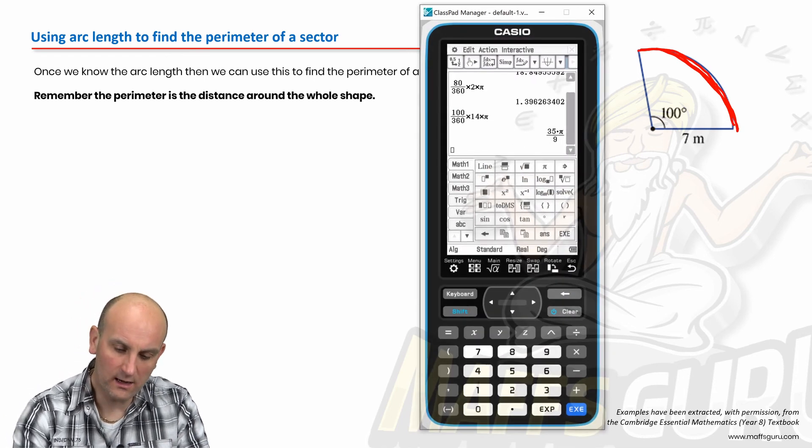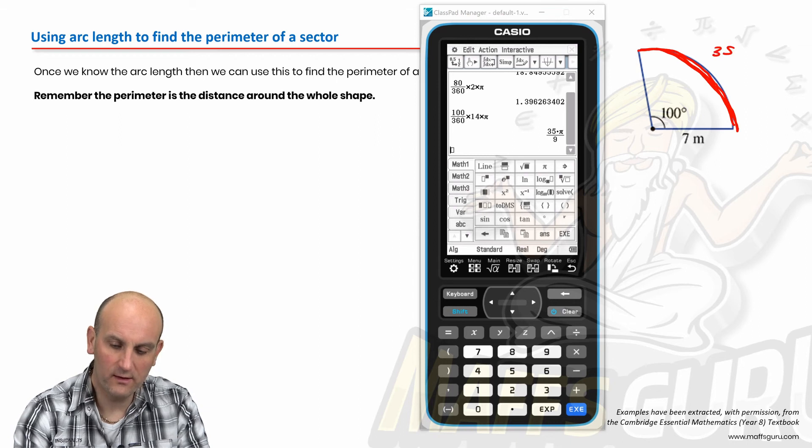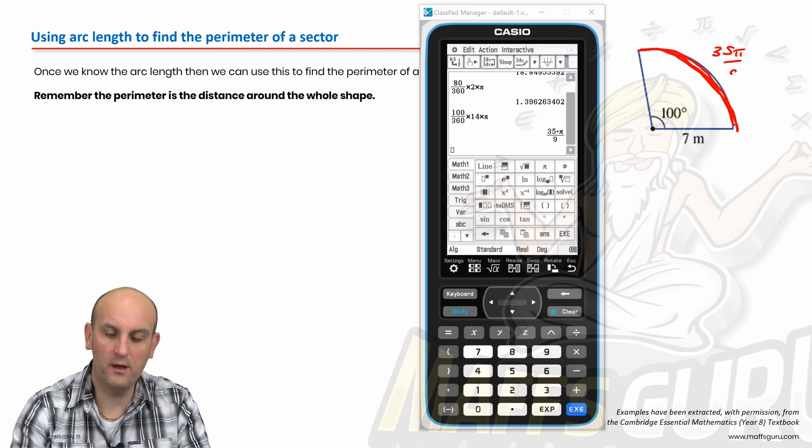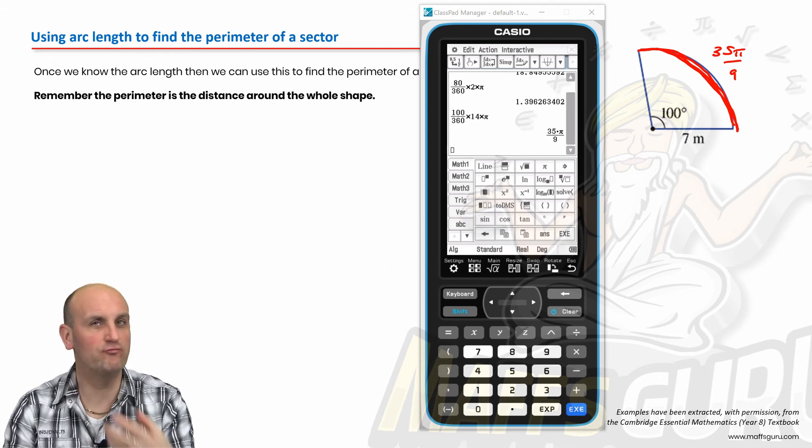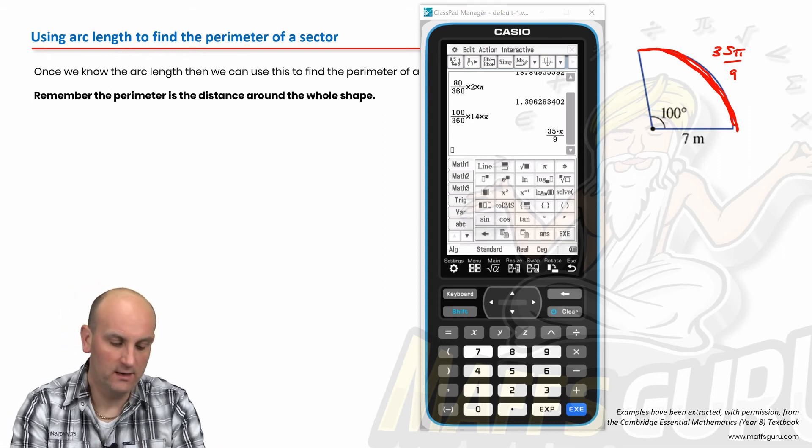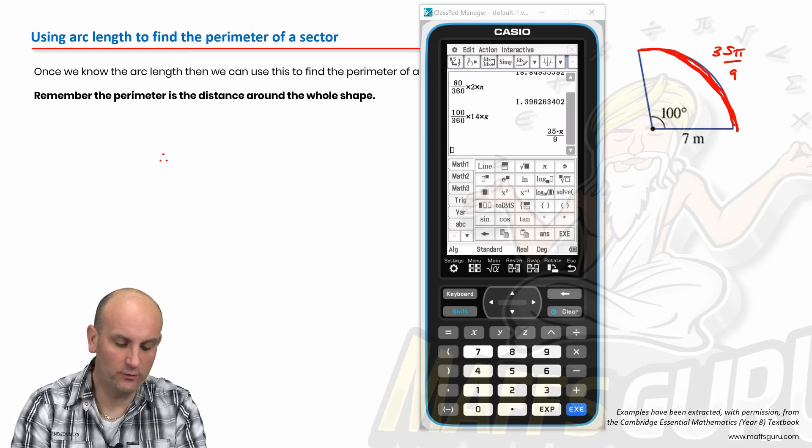So bring it back up my CAS calculator. We knew that this arc length was 35 pi on 9. Now notice how leaving in an exact value now is going to help us because we don't want to round until our final answer.